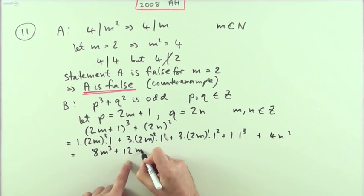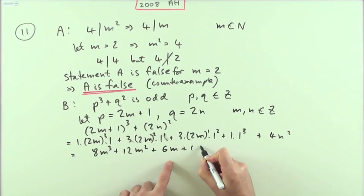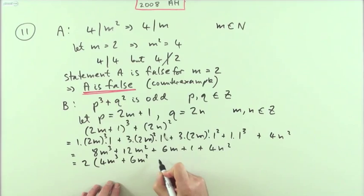So what's that all together? I've got 8m³ plus 12m² plus 6m plus 1 plus 4n². Then I just need to show, is that odd or is it even? Well, divide it by 2 as the remainder. Take out a factor of 2, so I've got 4m³, 6m², 3m, 2n², and unfortunately that 1 is left over.